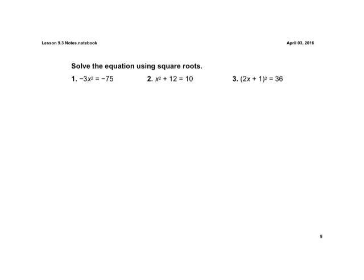Alright, a couple examples here. If we work through these quickly, we just divide by negative 3 here. So we're left with x squared equals a positive 25. Take the square root of both sides. So we're going to have x is equal to a positive and a negative 5.